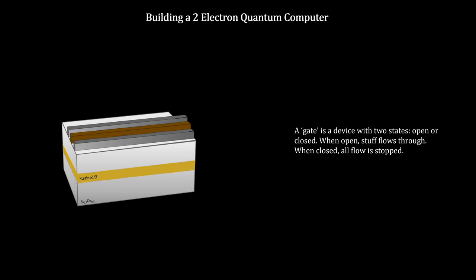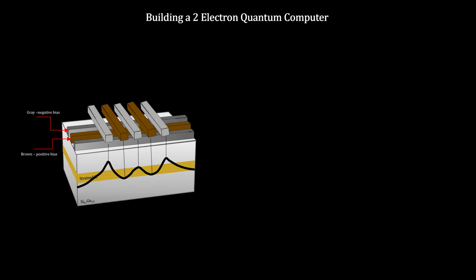On top, we construct an electrically controlled lattice of gates. Negatively biased electrostatic gates in gray and positively biased gates in brown are organized to create two energy wells capable of holding two electrons in place. These two wells are called quantum dots.